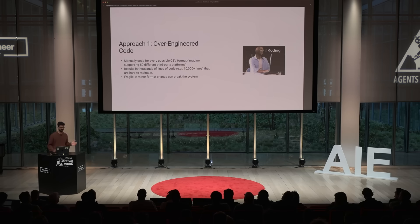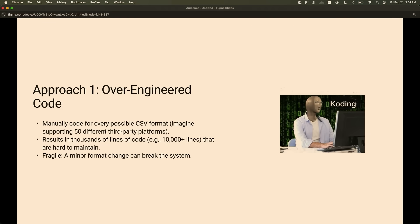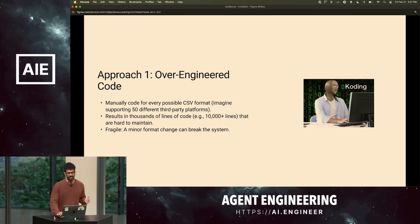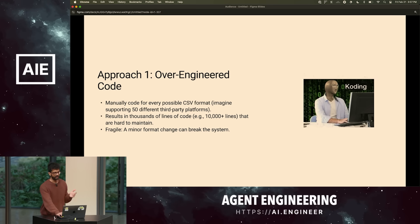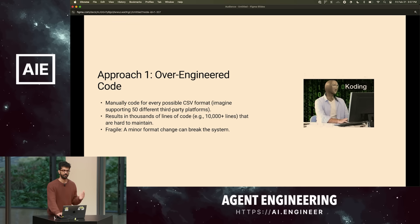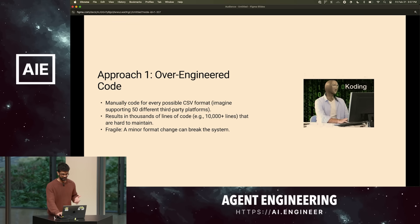Let's start with the simple approach: take the 50 most common third-party card vendors and just manually write code for all of them. Obviously this will just work. It is some work — you still have to go to 50 different platforms, download their CSVs, see what schemas they have, and then write code. Maybe if they change their format one day your thing will break, but that's okay — you'll get paged and you can wake up and go fix it.